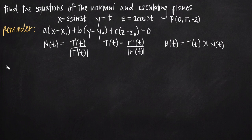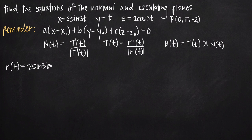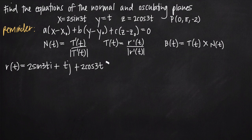All we're going to do is say that r(t) is equal to — we're going to transform these parametric equations into one vector equation. Each component becomes the coefficient on our i, j, and k terms respectively. So we get: 2 sine of 3t times i, plus t times j, plus 2 cosine of 3t times k. x, y, and z always correspond to i, j, and k respectively. So now we have this vector equation r(t).